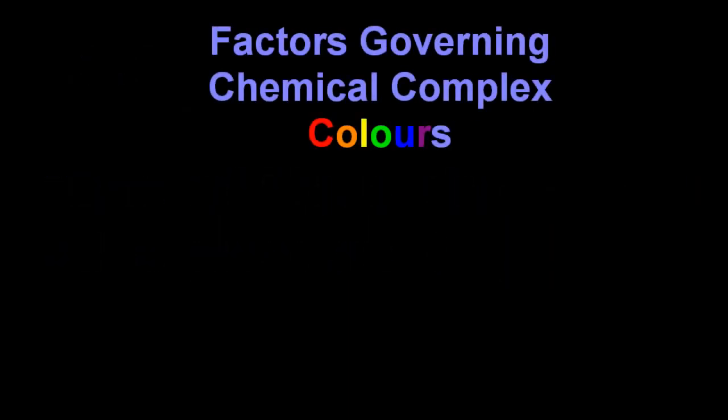What affects the colour of a complex? Well, there are four reasons, but the IB needs you to know three reasons. The first reason is the identity of the metal ion. Is it chromium? Is it copper?